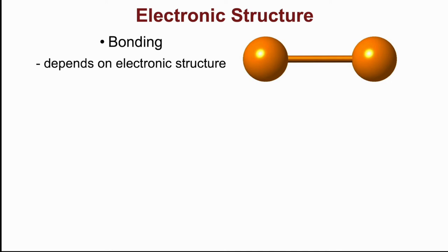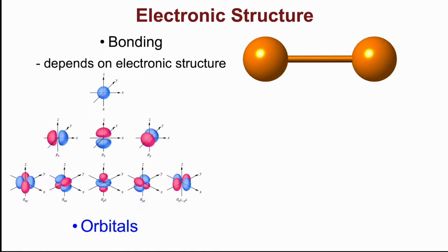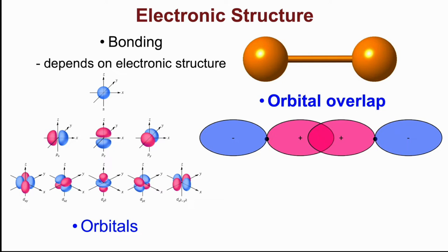The bonding in materials intimately depends on the atomic electronic structure, and for that moment we need to return to orbitals, specifically looking at how the orbitals on different atoms can overlap when they form a bond.